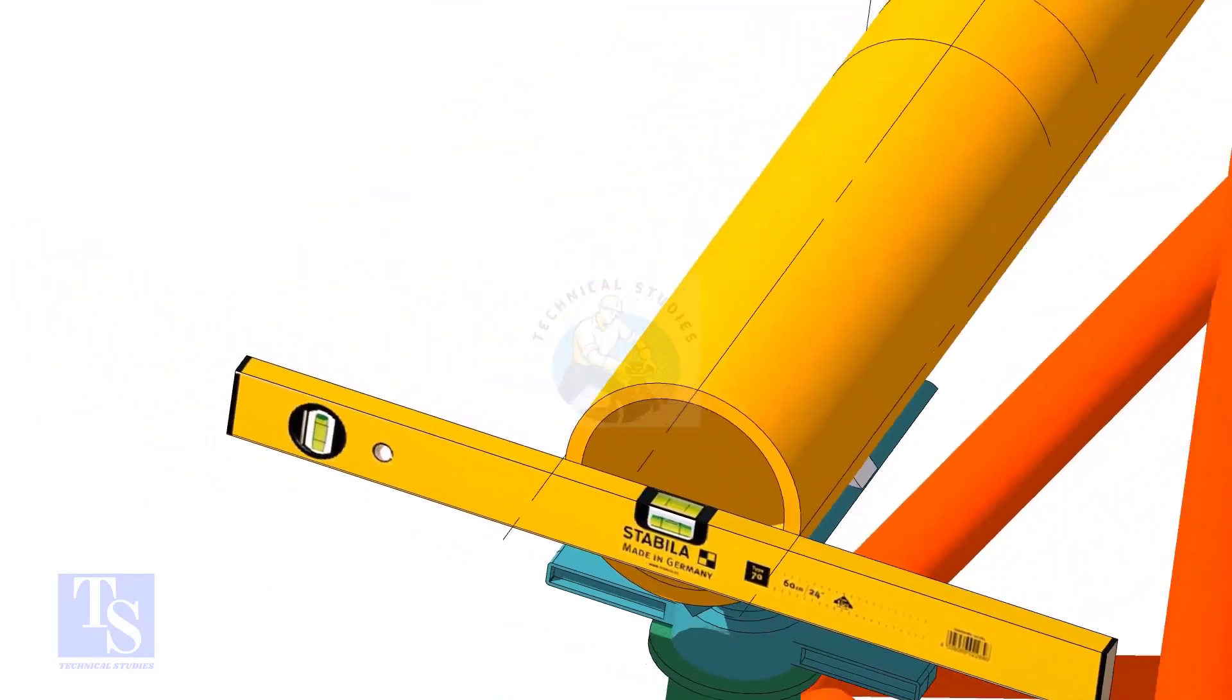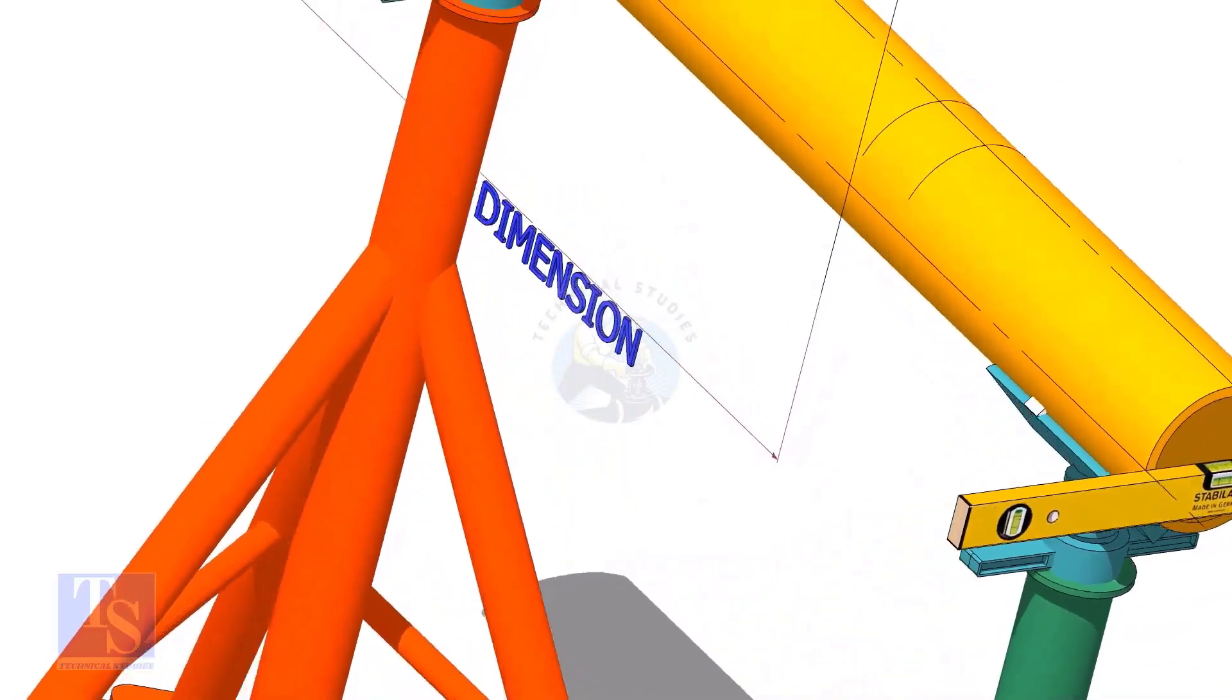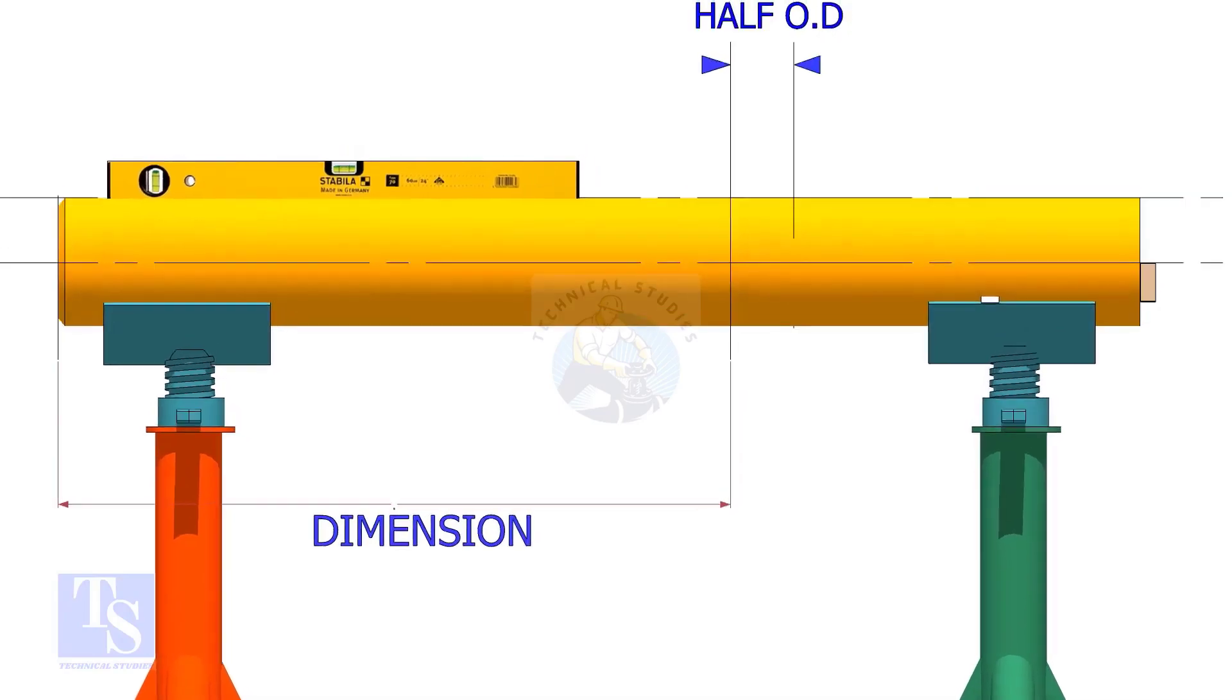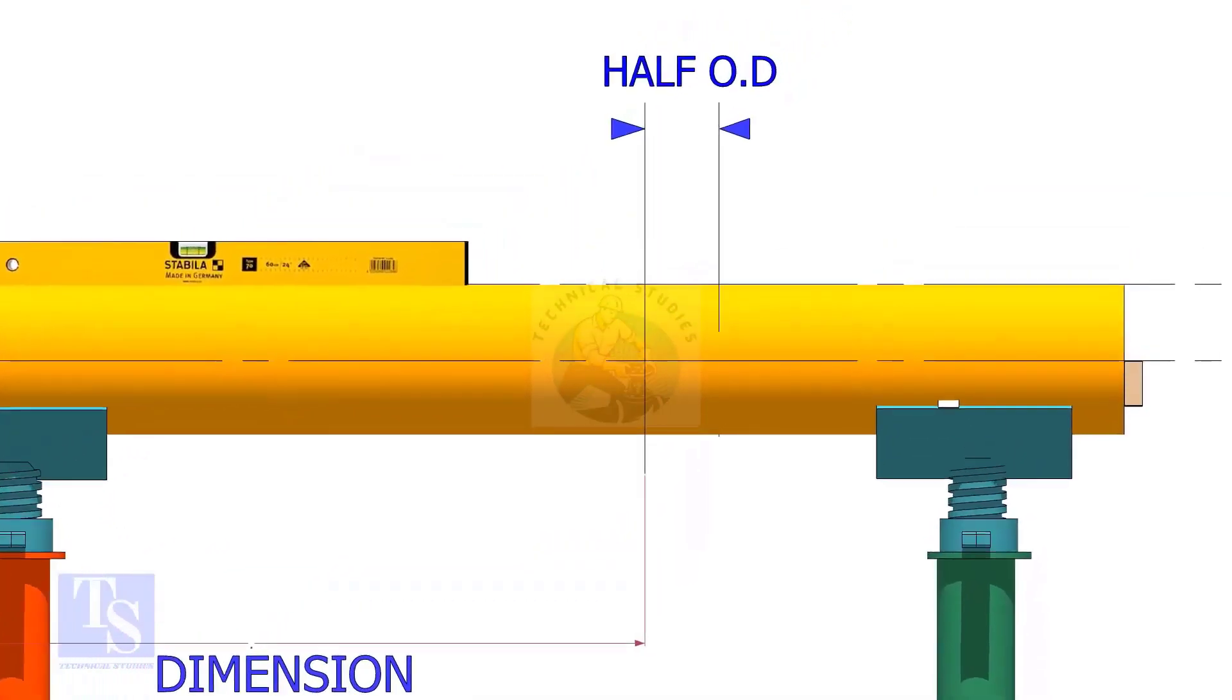Mark the center of the laterolette as per the drawing. Mark half OD of the header in the direction of the laterolette on the top of the pipe. This line is actually for inspection purposes only.